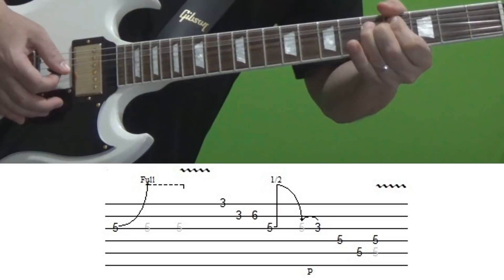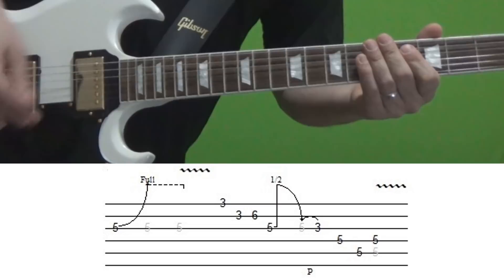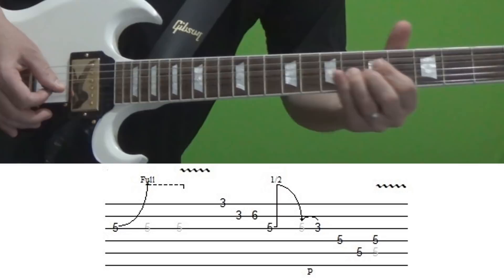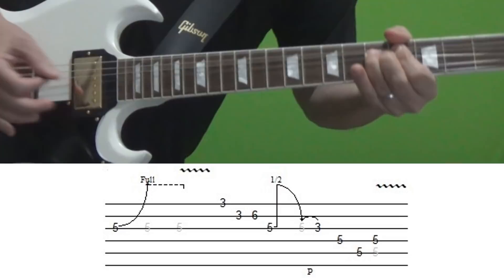And then that fifth fret bend, where it's a descending bend, you're basically starting, it's a half-step up, and then you bend down, okay? So you bend it up a half step, hit it, and then come down.